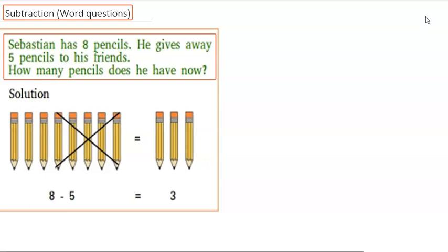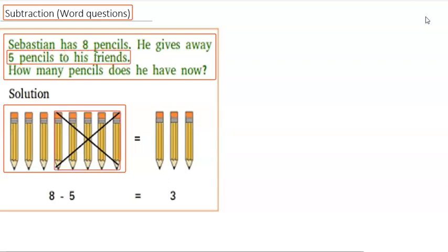Sebastian has eight pencils. He gives away five pencils to his friend. How many pencils does he have now? Here are the eight pencils that Sebastian has, and we are told he gives away five pencils to his friend. So how many pencils does Sebastian remain with?